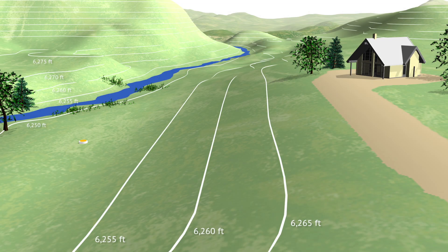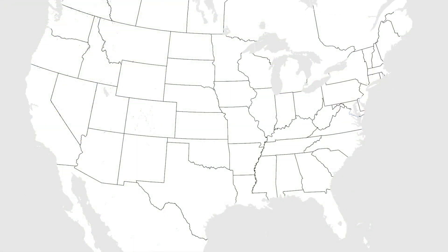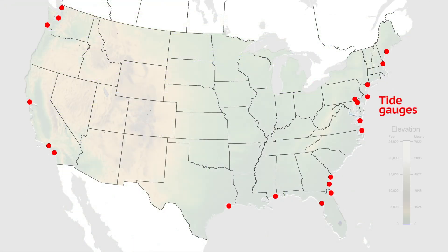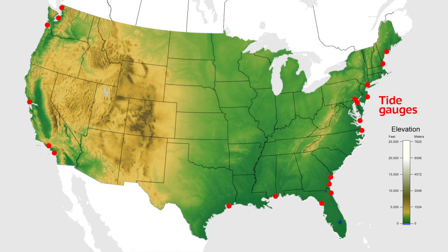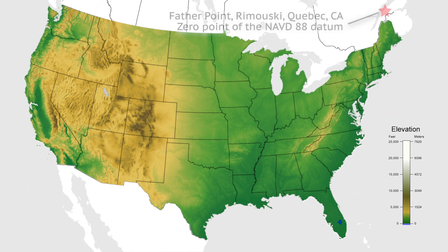Vertical datums are used to measure elevations and water depths. Sometimes the word height is used to refer to elevation information. Most vertical datums in North America use sea level as the basic reference plane from which we measure elevation changes. Because sea level varies along the coast for a variety of reasons, the idea of using multiple tide gauges to define the vertical datum was abandoned in 1988, in favor of using just one tide gauge.